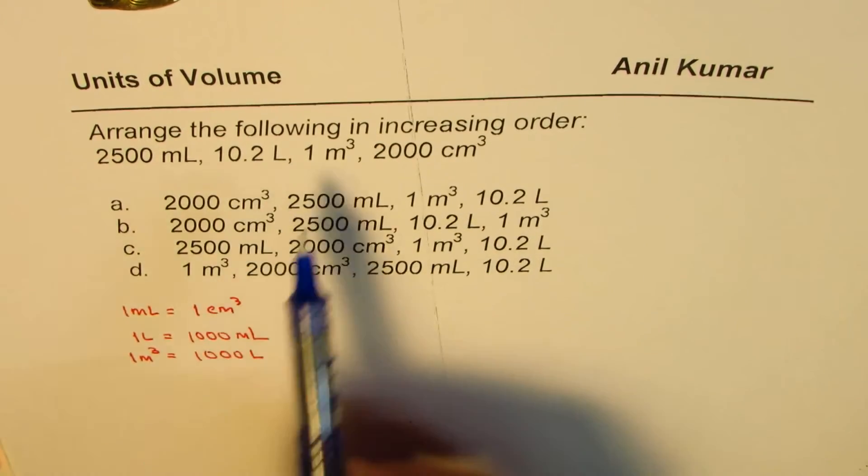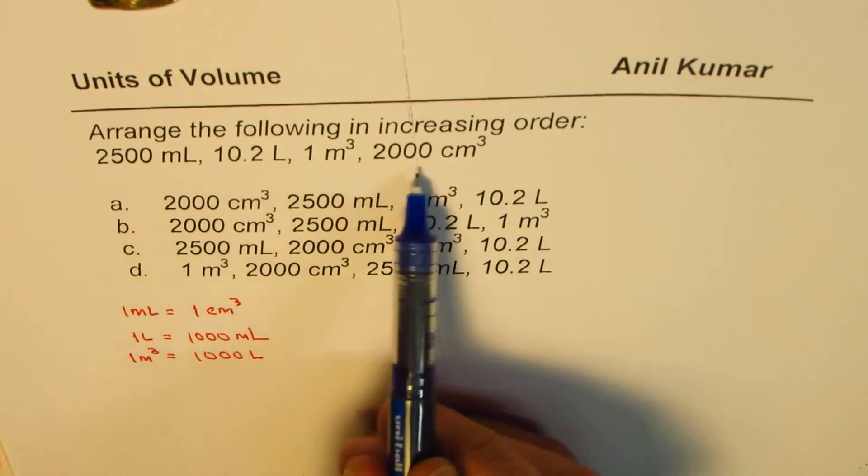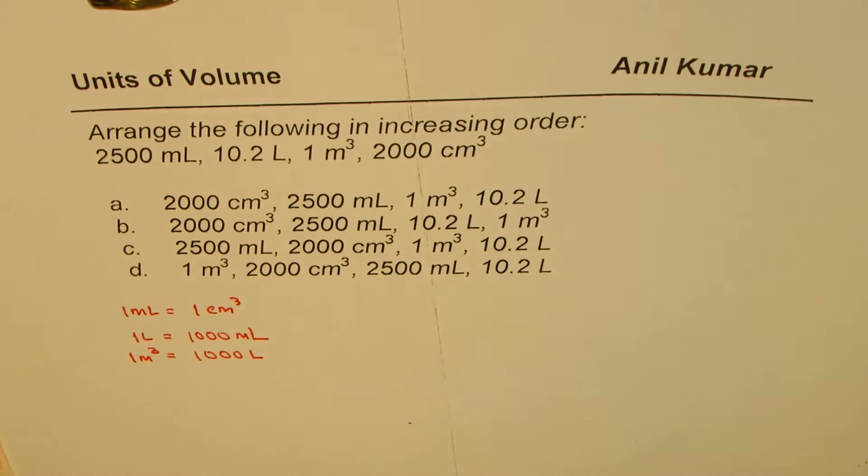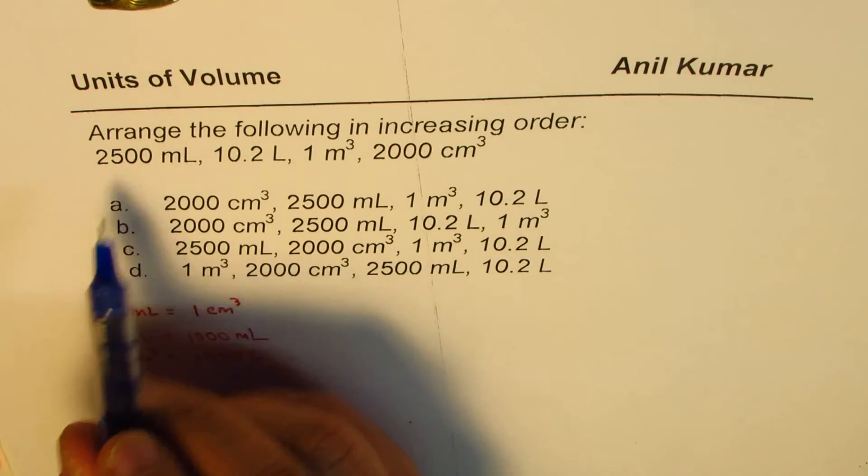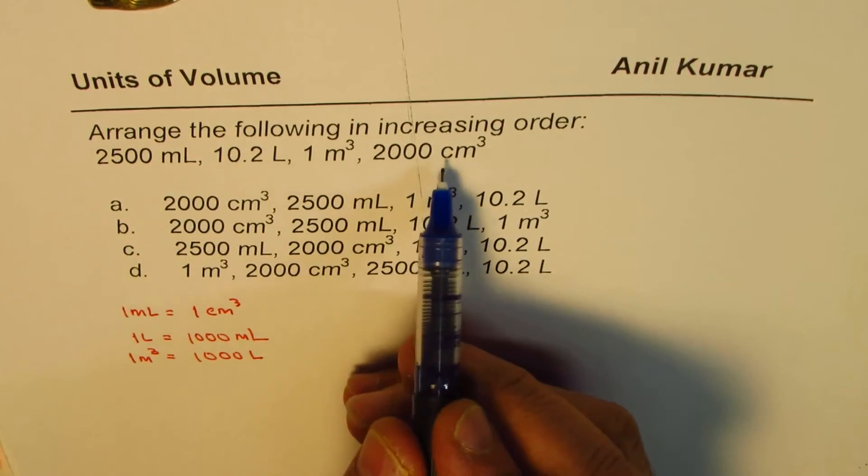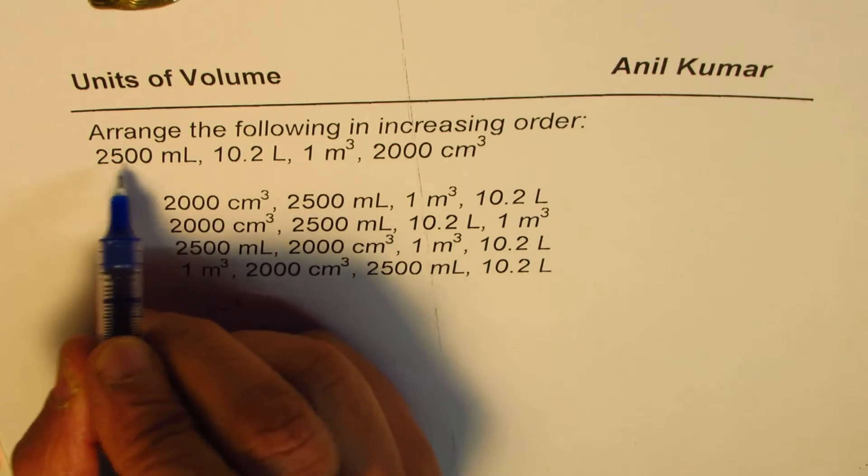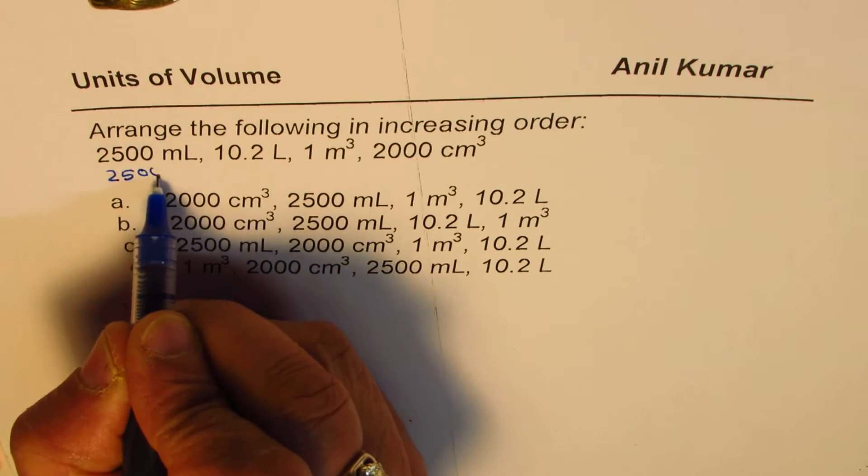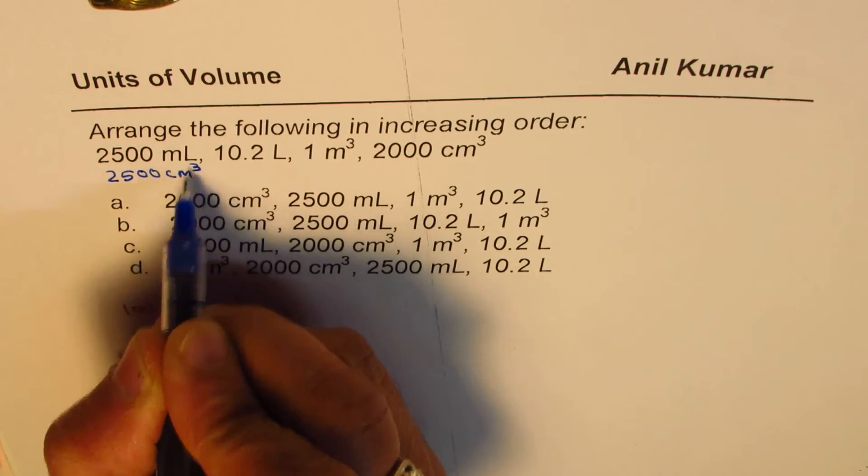If you see all this, what we can do is we can convert them into one particular unit. Now we know milliliter and centimeter cube are the same. So if I write this as 2500 milliliters, I could also write this as 2500 centimeter cube.